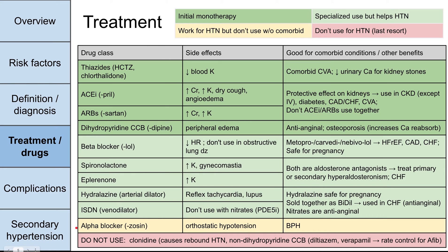There are drugs that affect blood pressure but you really don't want to use for that indication alone. The alpha blockers — the '-zosins' — are used for benign prostatic hyperplasia; they're not used frequently for blood pressure because they cause orthostatic hypotension, which can be dangerous. Clonidine should be avoided because it causes rebound hypertension. The non-dihydropyridine calcium channel blockers — diltiazem and verapamil — should really only be used for rate control in atrial fibrillation.